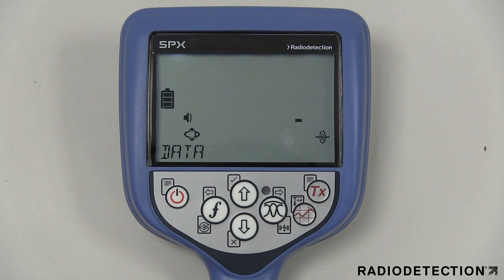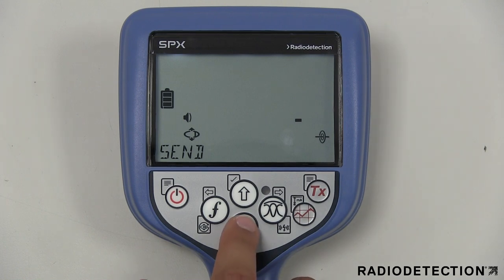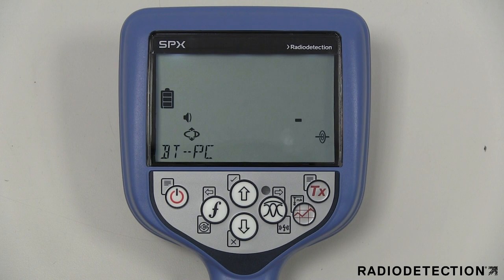The data menu option allows you to delete or send saved survey measurement data to a connected device via a Bluetooth connection. The exit option can be used to disable the communication channel.